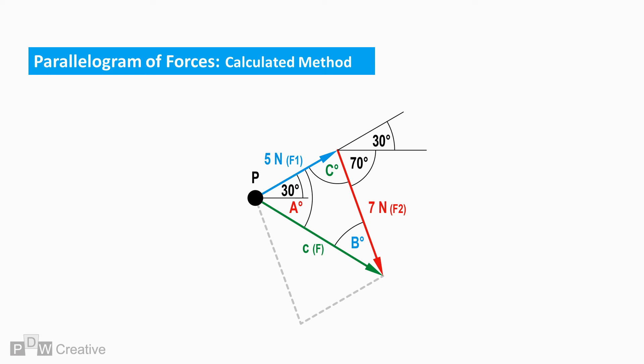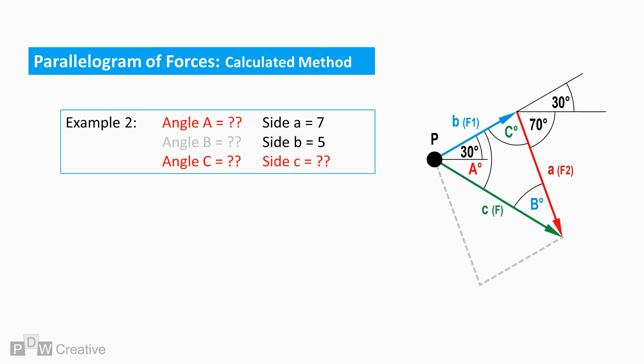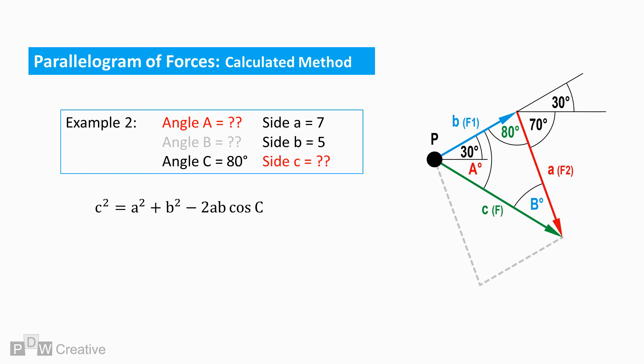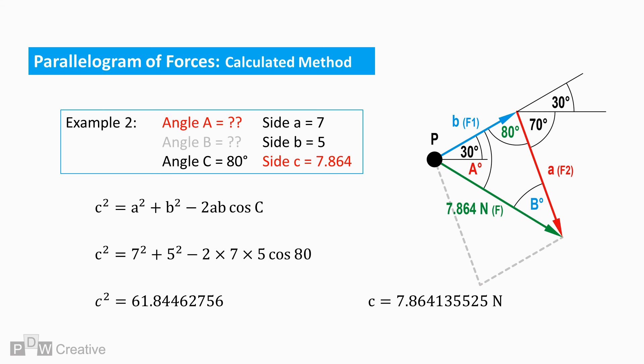Label the angles capitals A, B, and C. Angle C is first to calculate: deducting 70 and 30 from 180 degrees gives 80 degrees. The cosine rule can be used again for the resultant force magnitude, with sides A, B, and angle C used to calculate side C — the resultant force of 7.86 Newtons.